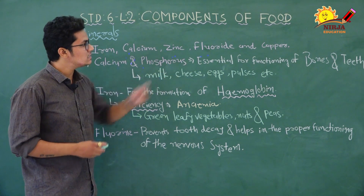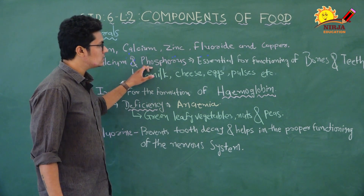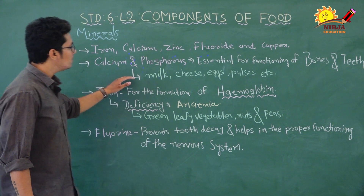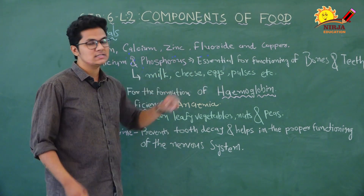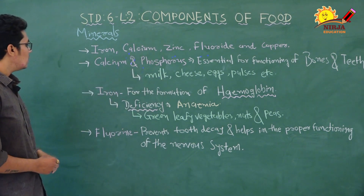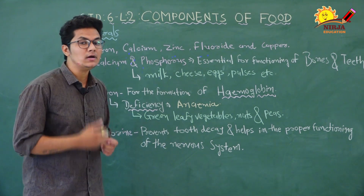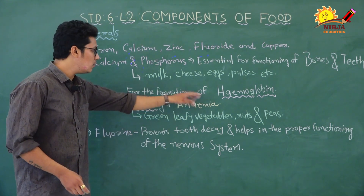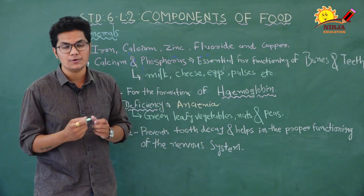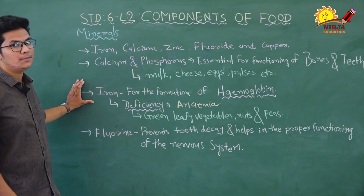Calcium and phosphorus are essential for forming bones and teeth. Milk, cheese, eggs, pulses, etc. are sources of calcium and phosphorus. Iron is required for formation of hemoglobin, a very important constituent of blood. Hemoglobin is the important component through which blood is formed, and iron is essential for its formation.